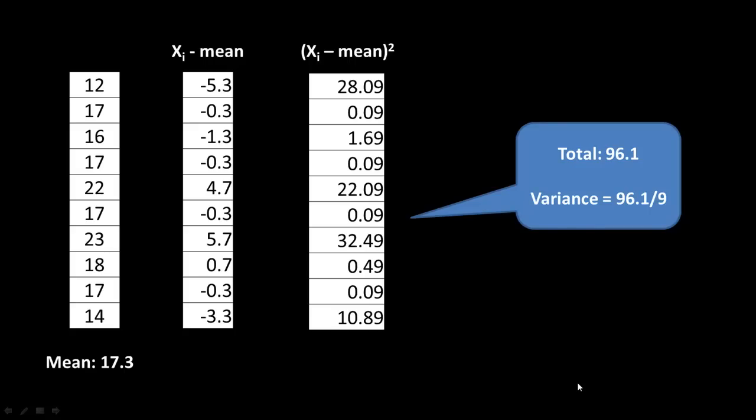The total of all the squared deviations is 96.1. We now divide that by 9, which is 10 minus 1. We have 10 observations. You divide by n-1 to get the variance.